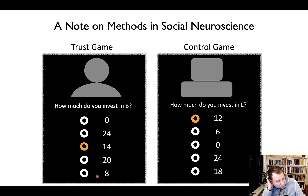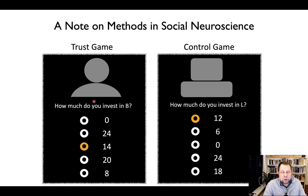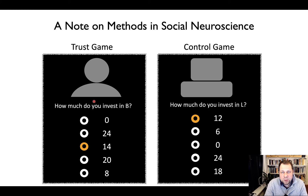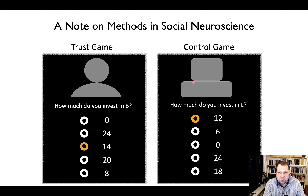What this is showing here is a very well-matched risk game or investment game that matches the trust game of interest. Similar types of control games can be used where participants typically interact with some kind of computer algorithm, or are told that they're interacting with a computer and not a human being. That is the only difference between these two games, such that the returns in one game depend on the decisions of another person, whereas in the control game they depend on the outcome of some algorithm — some chance, basically.